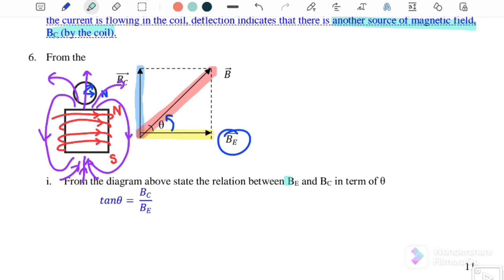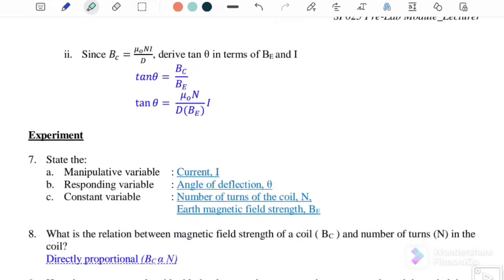From the diagram above, state the relation between the Earth's magnetic field and B from the coil, where tan θ = B_coil / B_E. Since B_coil = μ₀nI/d, derive tan θ in terms of B_E and I. If we substitute, we get tan θ = (μ₀n / dB_E) × I. This is the equation we will use to plot the graph.